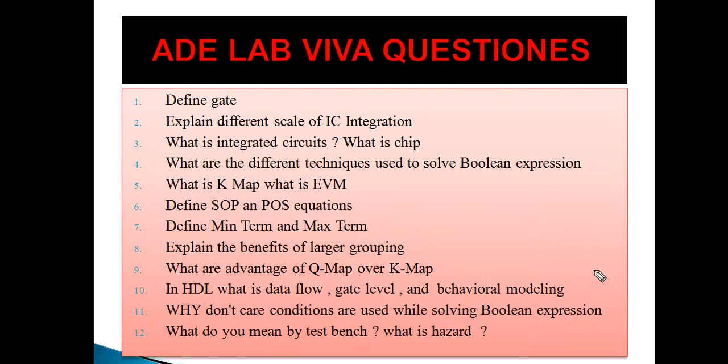Explain the benefits of larger grouping. By using larger grouping you can reduce the number of variables in the output expression. For example, in a 4-variable map, if you take individual cells there are 4 literals. If you group 2 (a pair), the output will be a three-variable expression. If you group 4 ones, the output will be a two-variable expression. If you group 8 ones, the output will be a single literal. The advantage is you can implement the circuit with fewer gates.